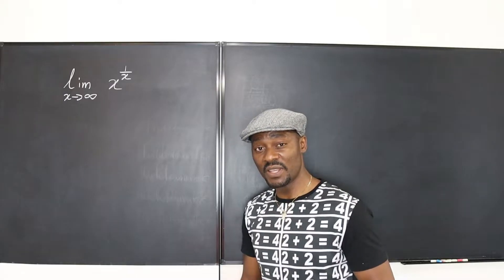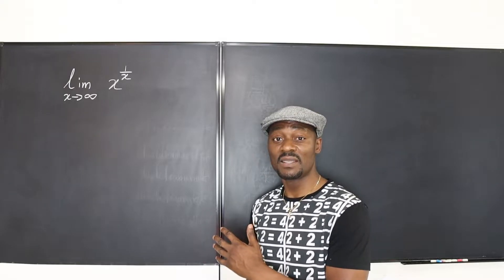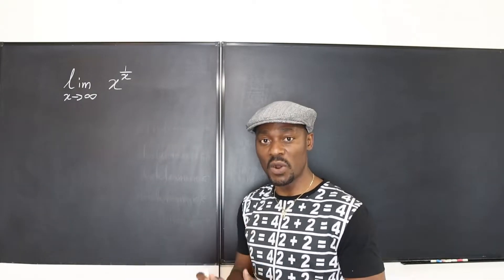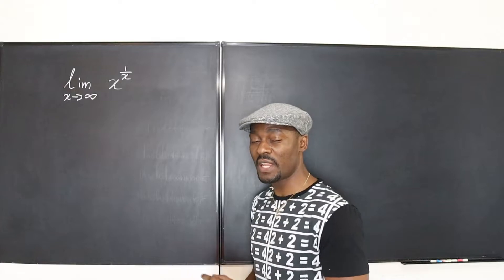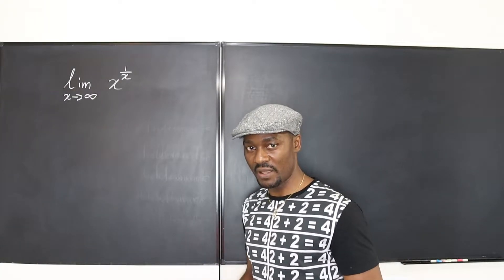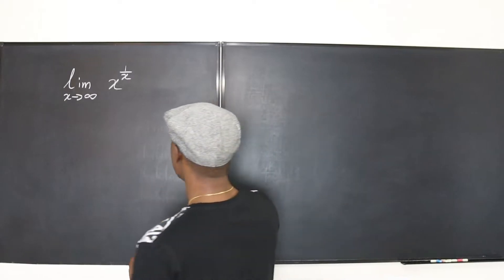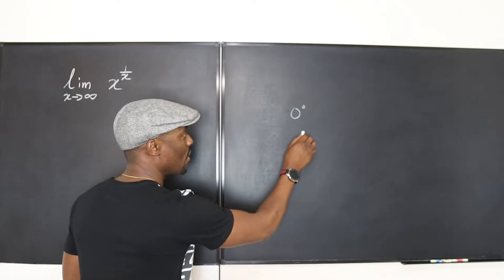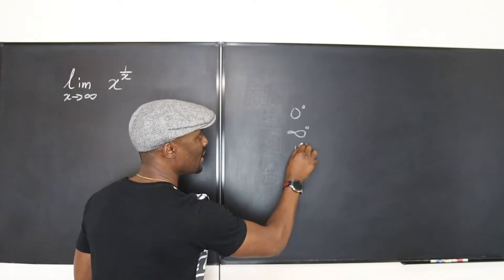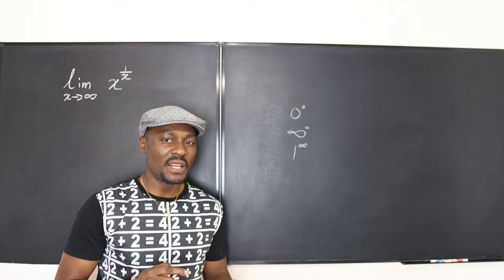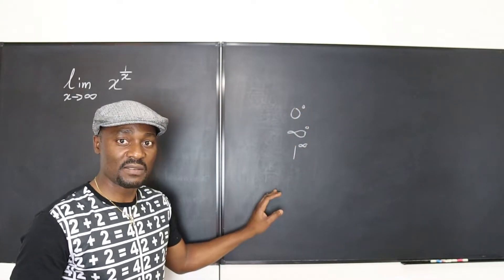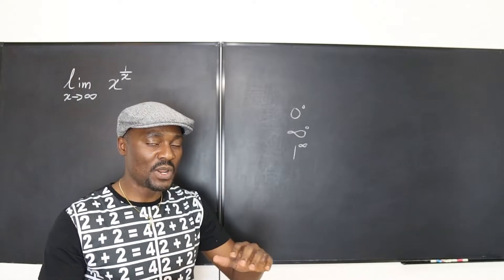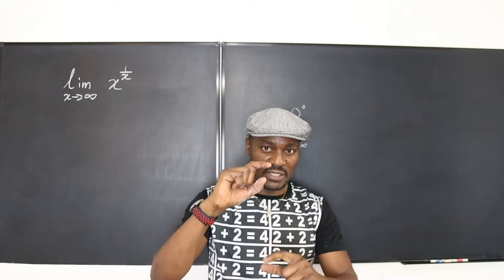Before I continue, let me tell you what the answer is: this limit is equal to 1, but not because infinity to the power of 0 is 1 — we're going to show our work in a completely different way. Whenever you have an indeterminate form like 0 over 0, 0 to the power of 0, infinity to the power of 0, or 1 to infinity, you want to employ the natural logarithm to bring down the exponent.